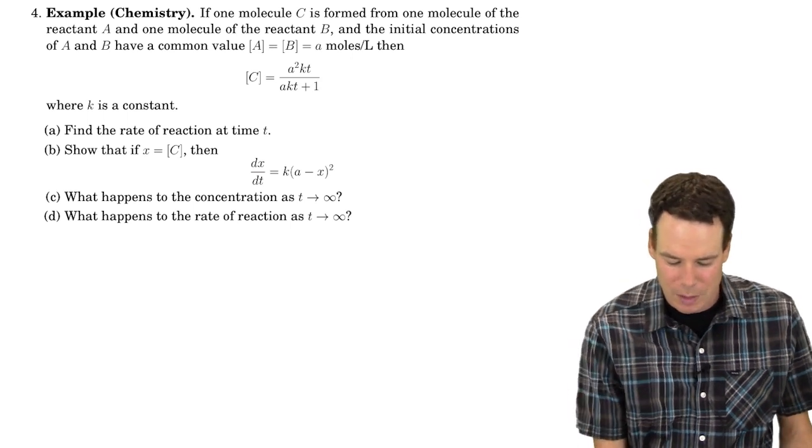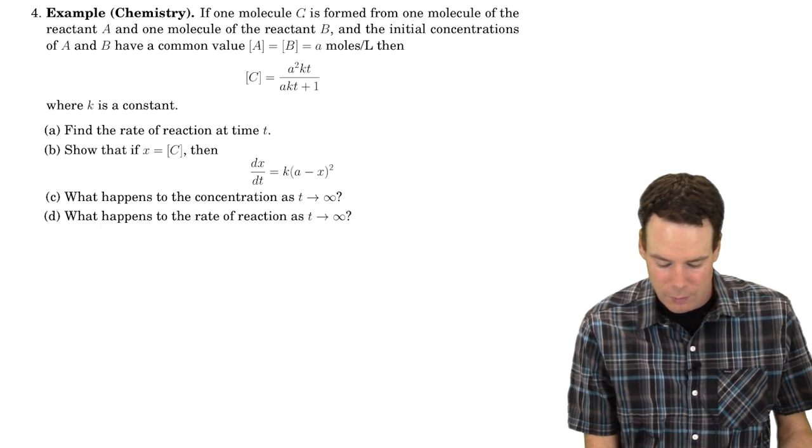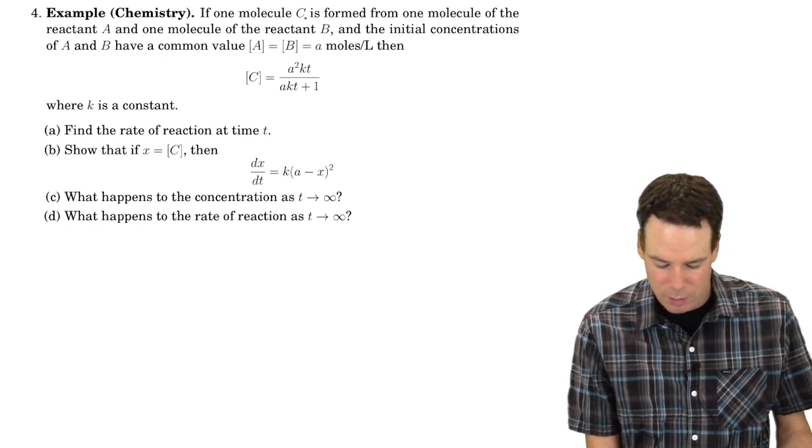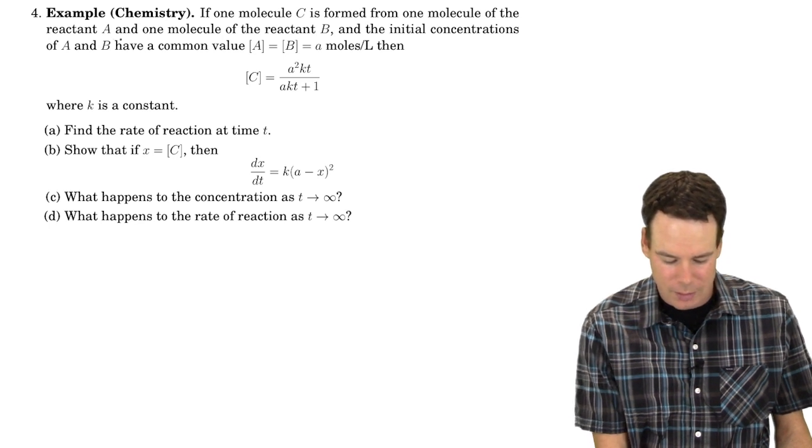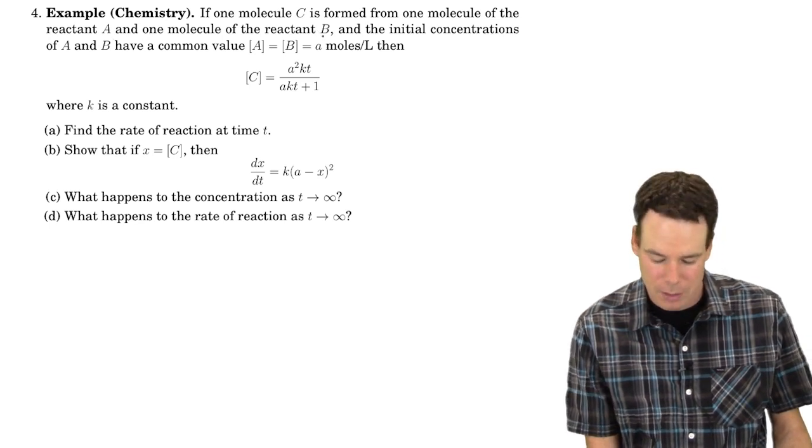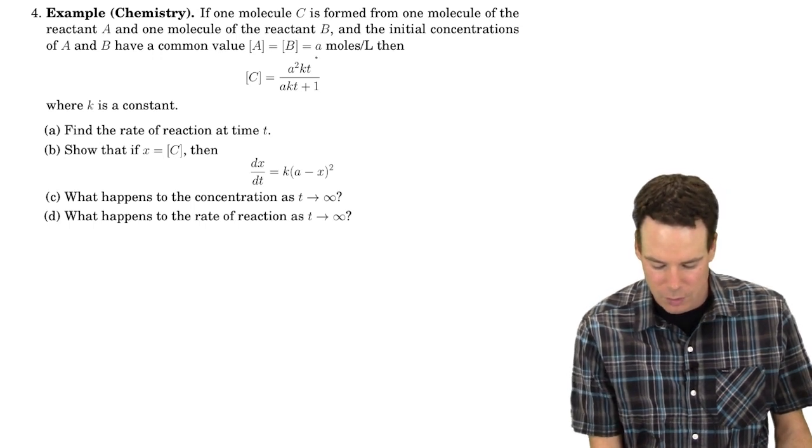Now we look at an example from chemistry. Suppose we have a reaction that's occurring. We have one molecule of product C formed from one molecule of reactant A and one molecule of reactant B.